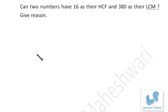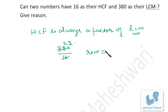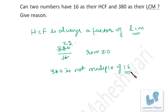Can two numbers have 16 as their HCF and 380 as their LCM? We must keep in mind that HCF is always a factor of LCM. So we check whether 380 is divisible by 16. When we divide 380 by 16, the remainder is not 0, meaning 380 is not a multiple of 16. Therefore numbers with HCF 16 cannot have LCM 380.